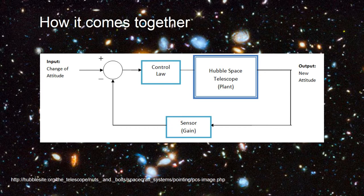The output is measured by the sensors, which are your fine guidance sensors, and it's referenced with the input. If the input isn't the same as the output, the process continues, and the control law drives the error to zero.